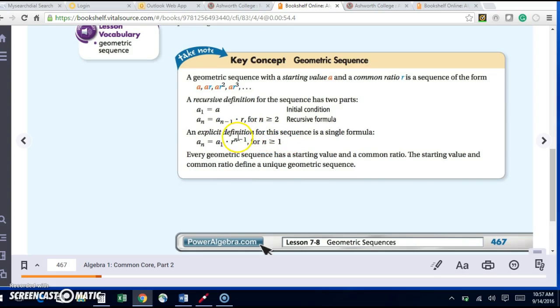When I plug in 1 here, I can't have 0. The least value I can have is 1. Every geometric sequence has a starting value and a common ratio. The starting value and common ratio define the unique geometric sequence.